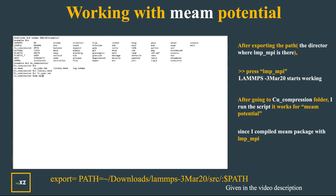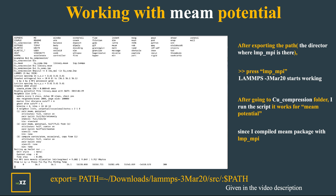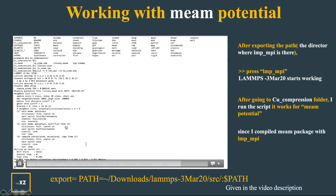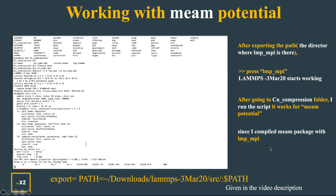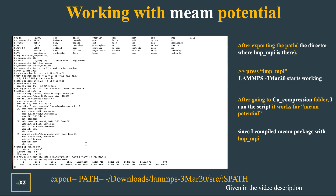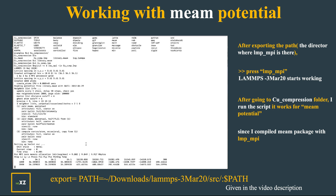I run the script with LAMPS using 6 processors: mpirun minus n 6 lmp_mpi minus in cu_comp.lammps. You can see that the script is running. It read the MEAM potential because I compiled the MEAM package with lmp_mpi. The thermodynamic output at step 0 is shown, then step 1000, then step 2000. I stop it using Ctrl+C. This is how you work with LAMPS compilation and using potentials.